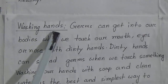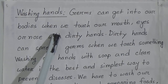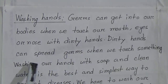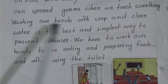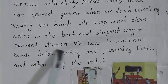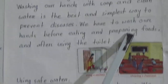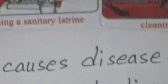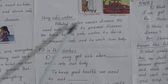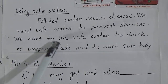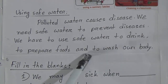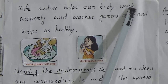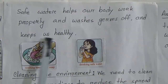The next point is washing hands. Germs can get into our bodies when we touch our mouth, eyes, or nose with dirty hands. Dirty hands can also spread germs when we touch something. Washing hands with soap and clean water is the best and simplest way to prevent diseases. We have to wash our hands before eating and preparing food, and after using the toilet. Safe water helps our body work properly, washes germs off, and keeps us healthy.